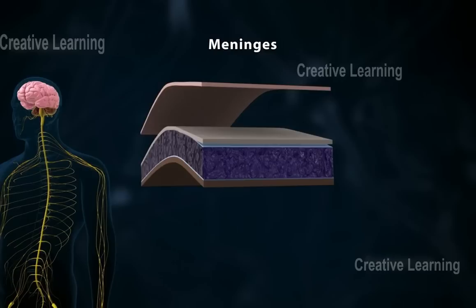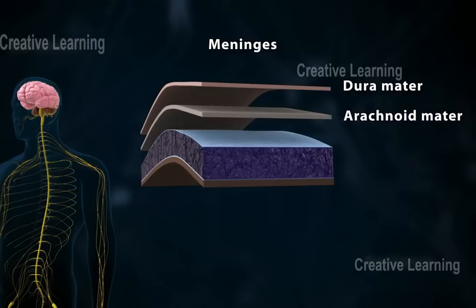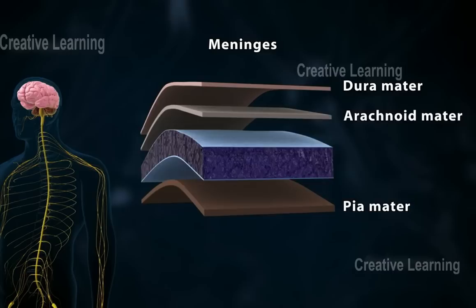The outer layer is called the dura mater. The middle layer is called the arachnoid mater, and the inner layer is called the pia mater.